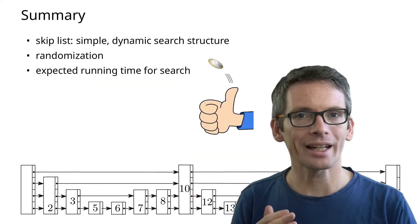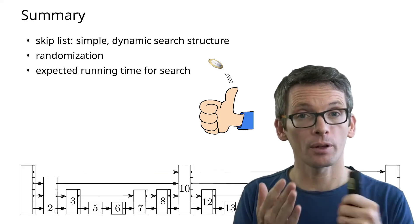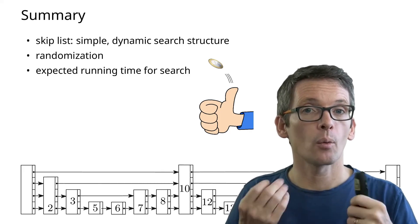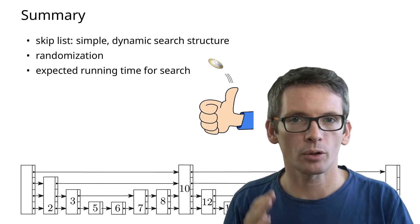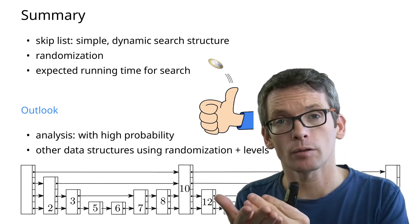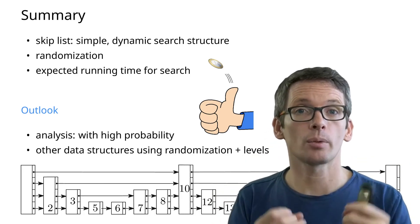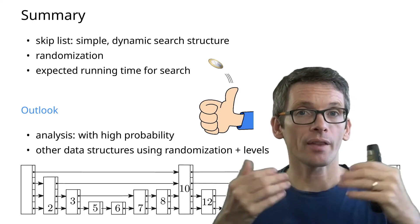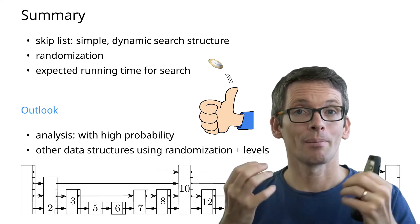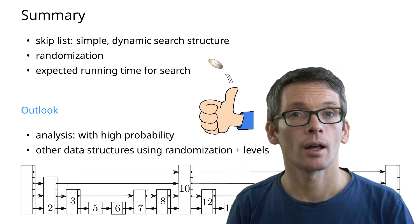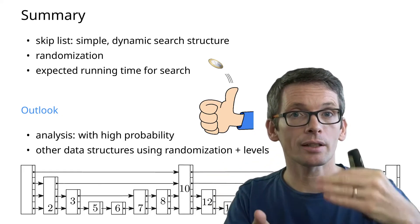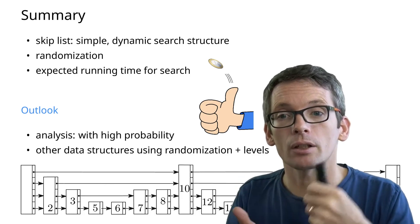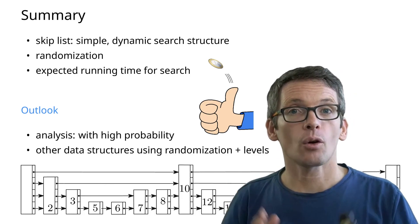This wraps up the analysis. What have we seen? We've seen skip lists as a simple dynamic search data structure, randomization in data structures, and the interesting part of the analysis — the expected length of the search path — where we used backwards analysis. It's also worth noting that both the size and search path bounds hold with high probability, not just in expectation. For that you need some extra probability theory, but the core idea is still the backwards analysis. Finally, this randomization idea — in particular the sampling to levels — appears in many beautiful geometric data structures as well. That's all for today.